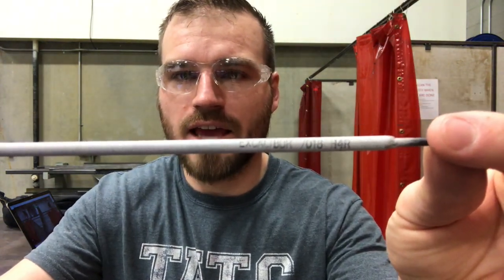Let's start with the 7018 rod. If we look at it, you can see Excalibur 7018 H4R. We're going to talk about what those numbers mean in a minute, but 7018 is kind of that all-around welding rod and it is by far the most popular of the two that I said I was going to talk about. It's mainly used for structural welding, pipelines. If you're going to go walk around and look at welds, you're probably going to see 7018 welds.